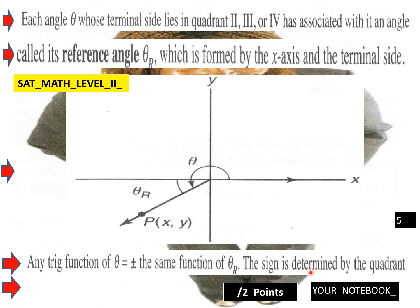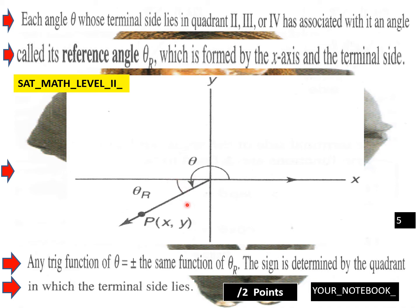Any trig function of theta equals plus or minus the same function of theta reference. The sign is determined by the quadrant in which the terminal side lies. This quadrant here is quadrant 3 — you have negative x's and negative y's. So for trig functions in quadrant 3, with a negative x and negative y, the result would be positive.